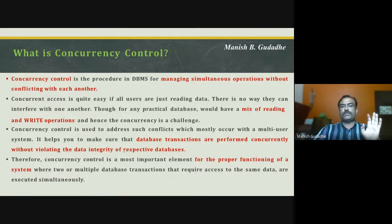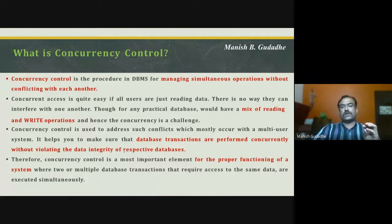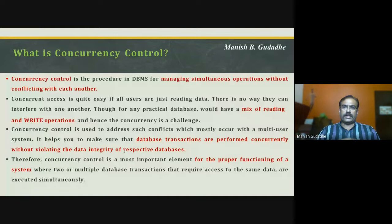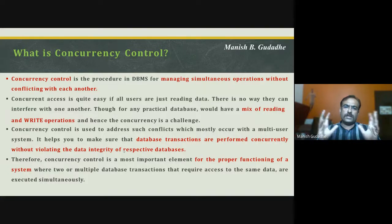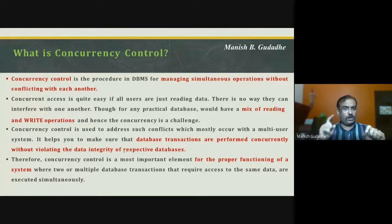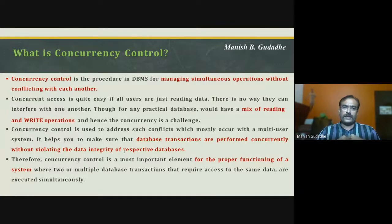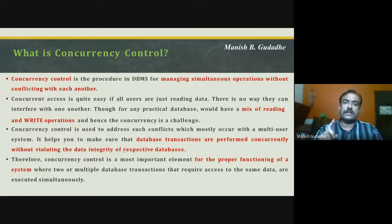Concurrency is a most important element for the proper functioning of a system where two or multiple database transactions are required to access the same data and are executed simultaneously. A computer, even though it looks like a multi-functioning system, is capable of handling only one operation at a time — maybe for a fraction of a millisecond — but at a time it performs only one task.